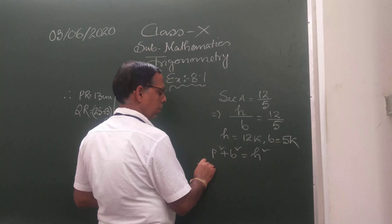Here it is 0, then π/2, then π, then 3π/2, and then 2π. The first quadrant is 0 to 90 degrees. The second quadrant lies between 90 and 180 degrees. The third lies between 180 and 270 degrees. The fourth lies between 270 and 360 degrees. This is very, very important and has a lot of applications. The direction is anti-clockwise, not clockwise.